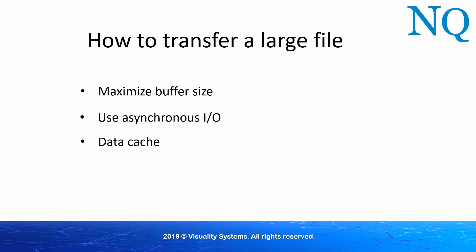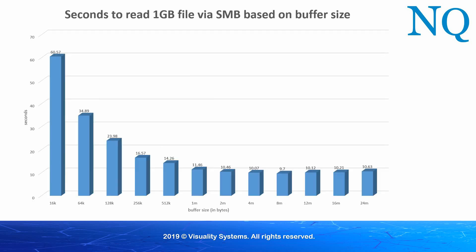Let's go back to buffer sizes and see what happens when we use different buffer sizes. Here we see the results of a simple test that I performed reading a one-gigabyte file via SMB. Note that it took over one minute to read the file with a 16K buffer. Compare that with a 10-second read using a 4-megabyte buffer.